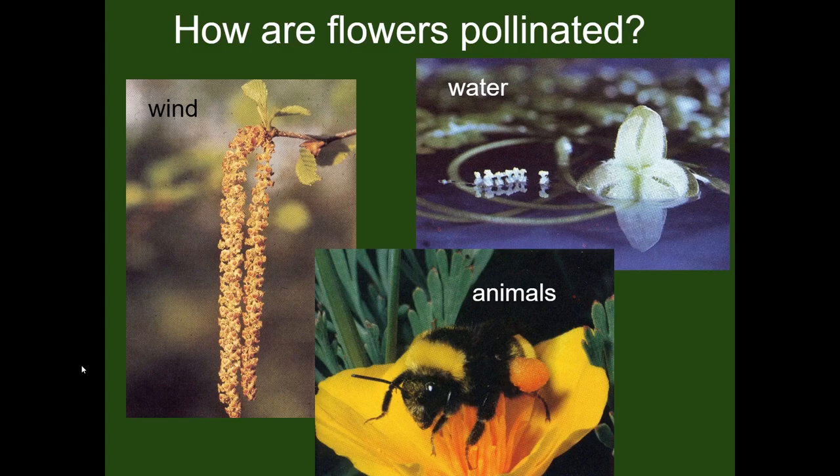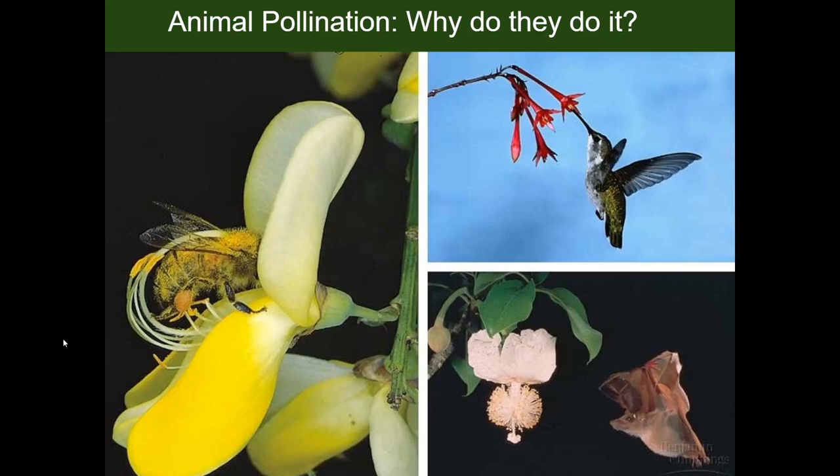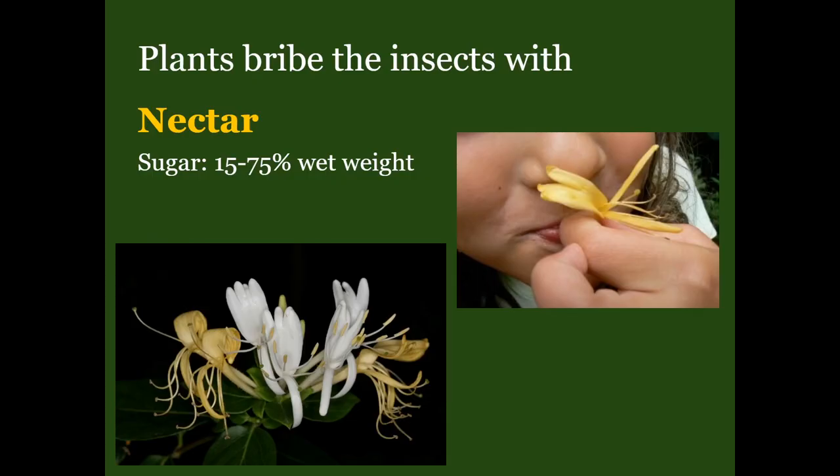Now that we understand the basic parts, how does the pollen get from the stamen to the stigma? The diversification of these adaptations is incredible. The three primary ways are wind, water, and animals. Why do the animals help the plants? The plants provide an incentive of a sugar in the form of nectar. Nectar can be made up of up to 75% of that sugary sweet stuff.